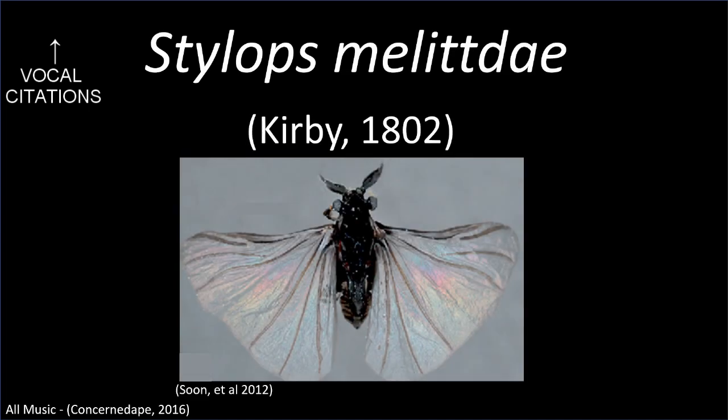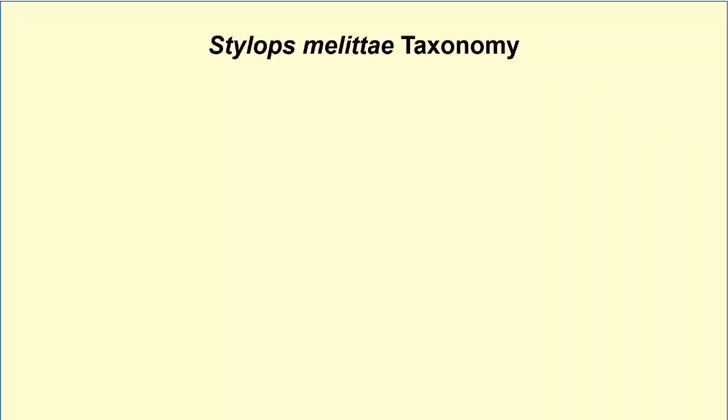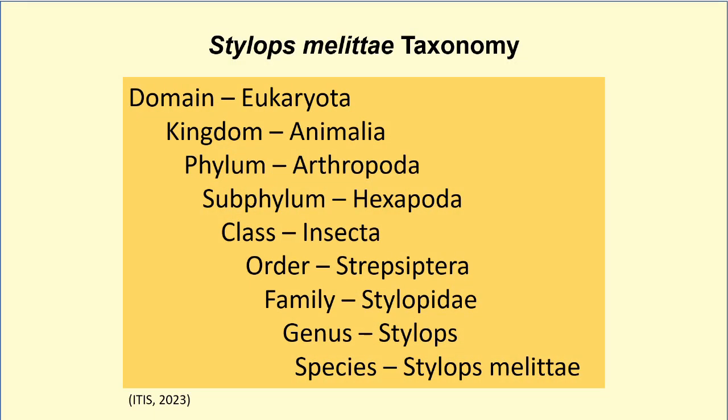Stylops metidae is a parasitic insect arthropod that comes from the order Strepsiptera within the genus Stylops. Stylops metidae's host of choice are bees from the genus Andrena, also known as solitary sand bees, which are absolutely crucial for wildflower pollination.